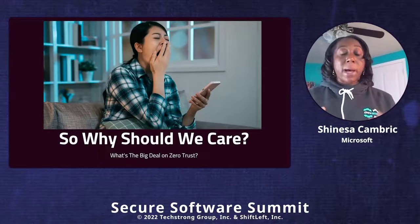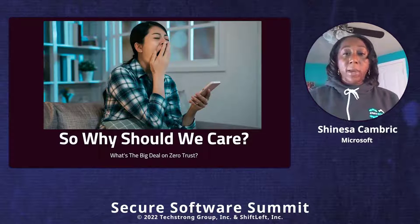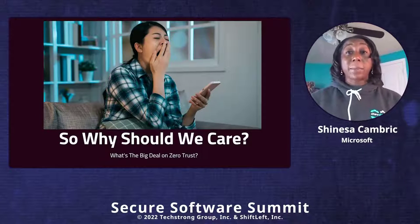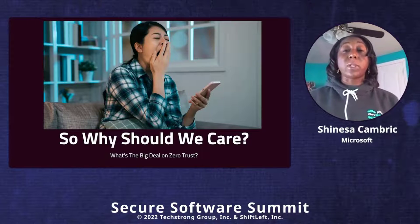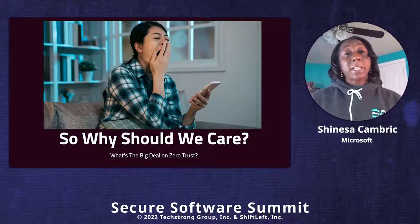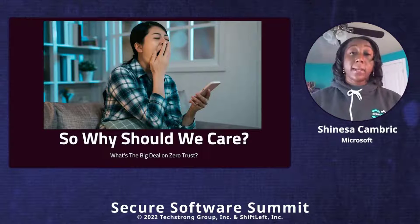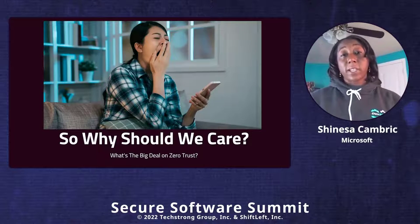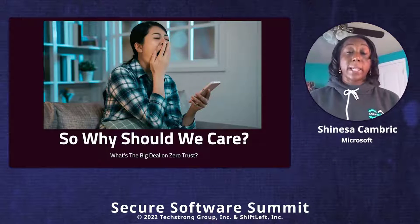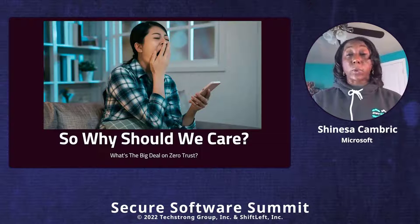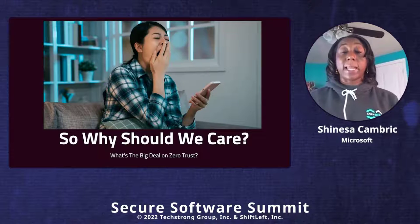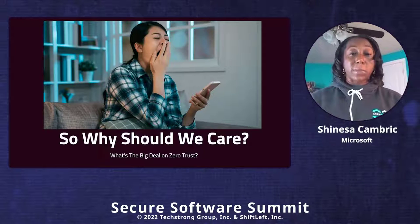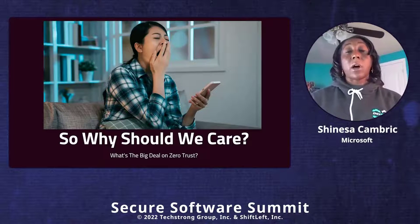There's a lot of synergy between zero trust and application security. As you consider the mindset of zero trust and identity, and your applications as the doorway, there are a few things to think about: protecting data and applications from the inside out, protecting from the outside in, and protecting those integrations in between your environment and your supply chain. Sometimes attackers may be coming directly to you to get your assets, but it could be that they're coming through you to get to your downstream partners, vendors, or suppliers — and vice versa.